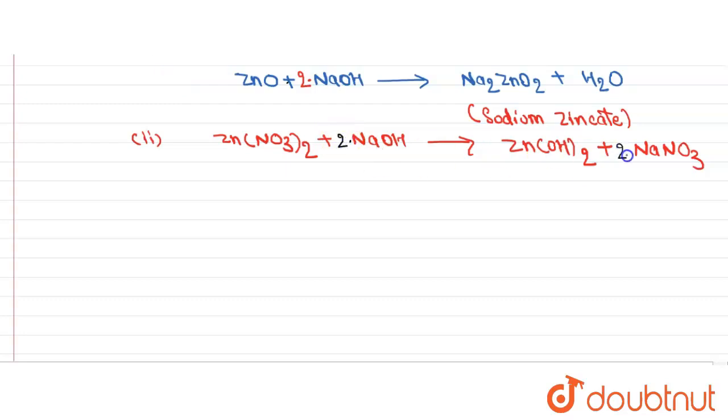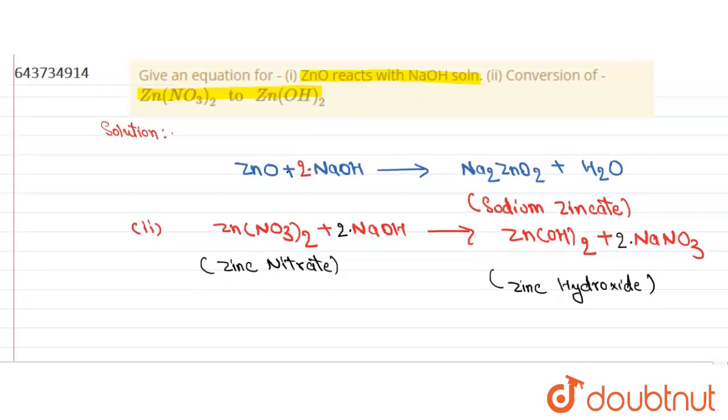So zinc hydroxide is prepared from zinc nitrate by the reaction of sodium hydroxide. Thank you.